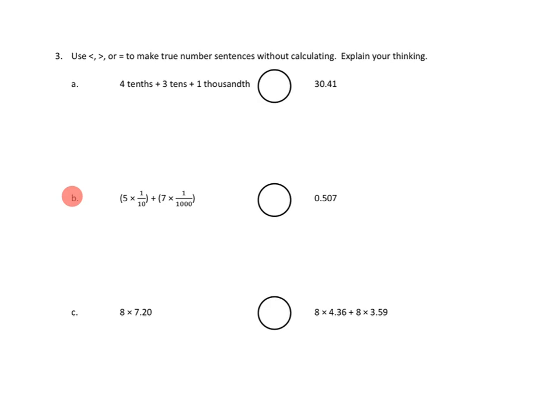Let's take a look at problem number three. Use less than, greater than, or equal to to make true number sentences without calculating, explain your thinking. So I'm not going to calculate anything. I'm going to take a look at 3B. This is like expanded form, right? So, 5 copies of a tenth, and what do I see over there? I see exactly 5 copies of a tenth. And then 7 copies of a thousandth, and I look over there and I see 7 copies of a thousandth, and I think we're done, right?